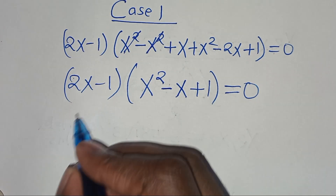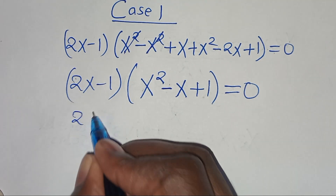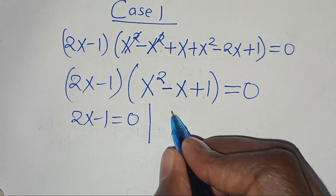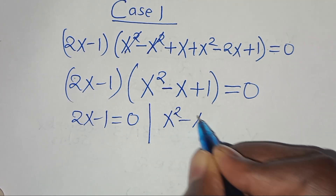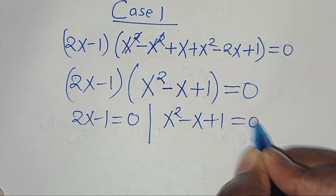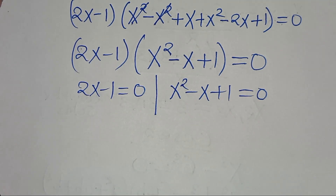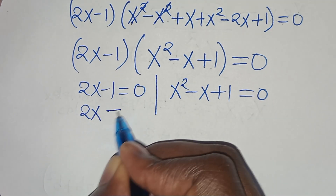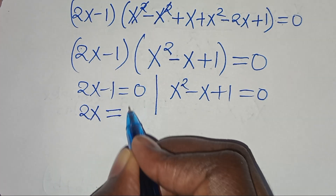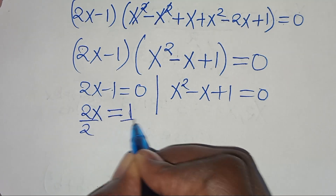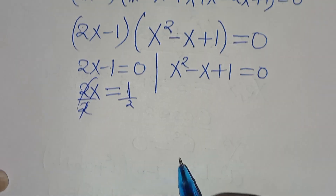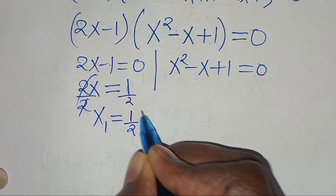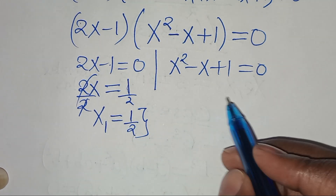We have two parts here. The first part is 2x minus 1, this is equal to 0, and the second part is x squared minus x plus 1, this is equal to 0. From the first part, we have 2x equal to 1, let's divide both sides by 2, and this means that x₁ is equal to one half. So this is the first real solution.